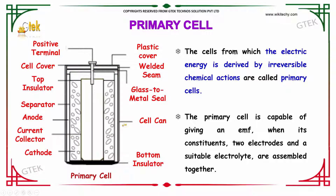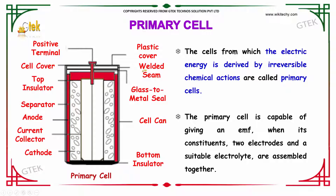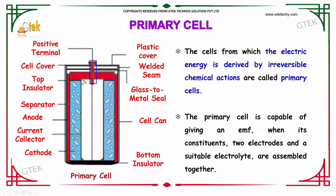A cell can, and this is your welded seam and a glass to metal seal. Apart from that you got your top insulator, a separator and anode here, and this is your cathode.